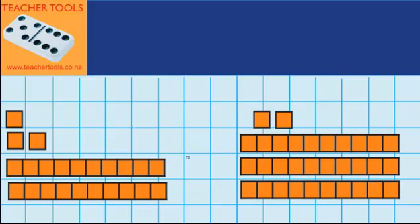Over here I've got 23, which is made up of 2 tens and 3 ones. And over here I've got 32, which is made up of 3 tens and 2 ones. I want to add those together, so I can record that like this: 23 plus 32.